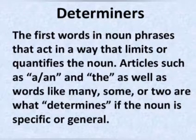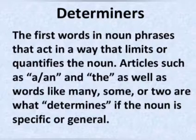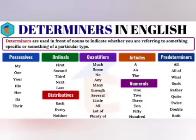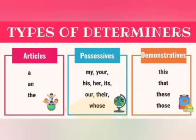One more thing: determiners are the first word in noun phrases that limit or quantify the noun. Articles such as 'a,' 'an,' and 'the,' as well as words like 'many,' 'some,' or 'two,' determine whether the noun is specific or general. The types of determiners include articles, possessives, and demonstratives. Possessives are: my, your, his, her, its, our, their, and whose. Demonstratives are: this, that, these, those.